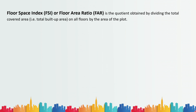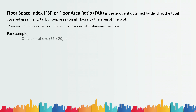We need the built-up area to find out the Floor Space Index. Floor Space Index, FSI, or Floor Area Ratio is the quotient obtained by dividing the total covered area — that is the built-up area on all floors — by the area of the plot. The reference is NBC of India 2016, Volume 1, Part 3, page 11. Let me explain FSI with an example.